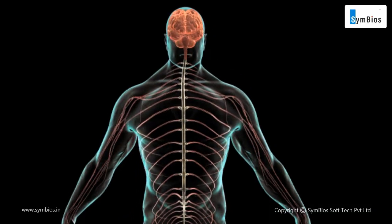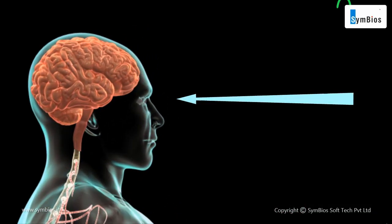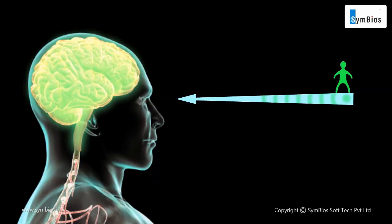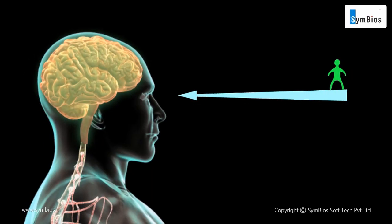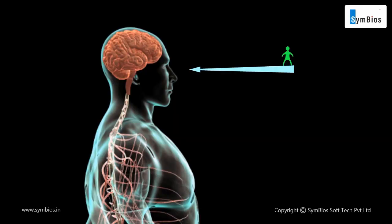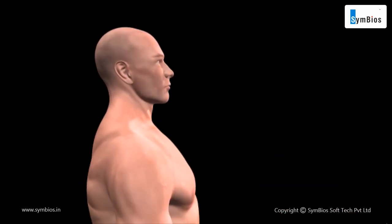Hence, the brain analyses the sensory impulses from the environment, interprets and responds to those stimuli appropriately. These stimuli reach the muscles or glands through the motor neurons for a coordinated action.